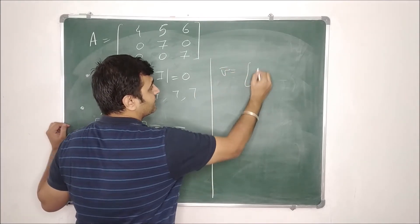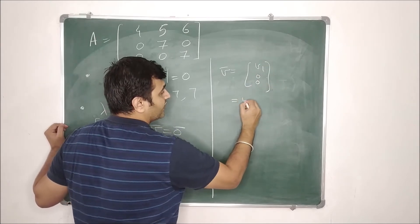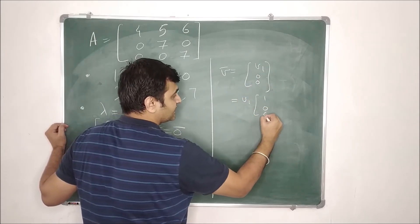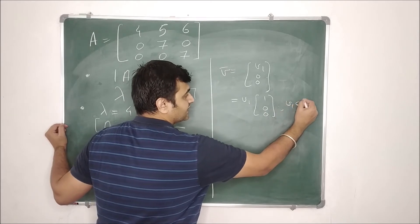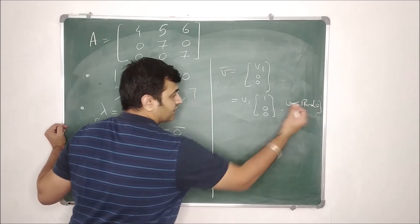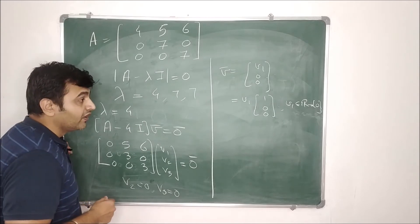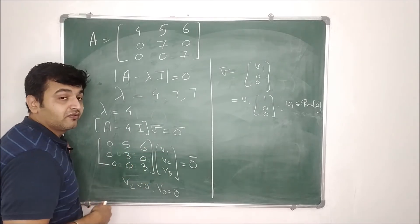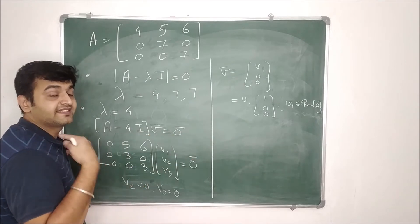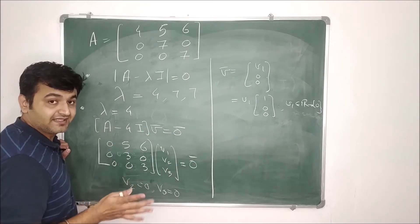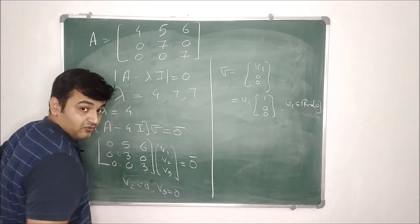Therefore V-bar is V1, 0, 0, which equals V1 times the vector (1, 0, 0), where V1 is a non-zero real number because we always take non-zero eigenvectors. So you take all multiples of (1, 0, 0) — that means all vectors on the x-axis in three-dimensional space except the origin.